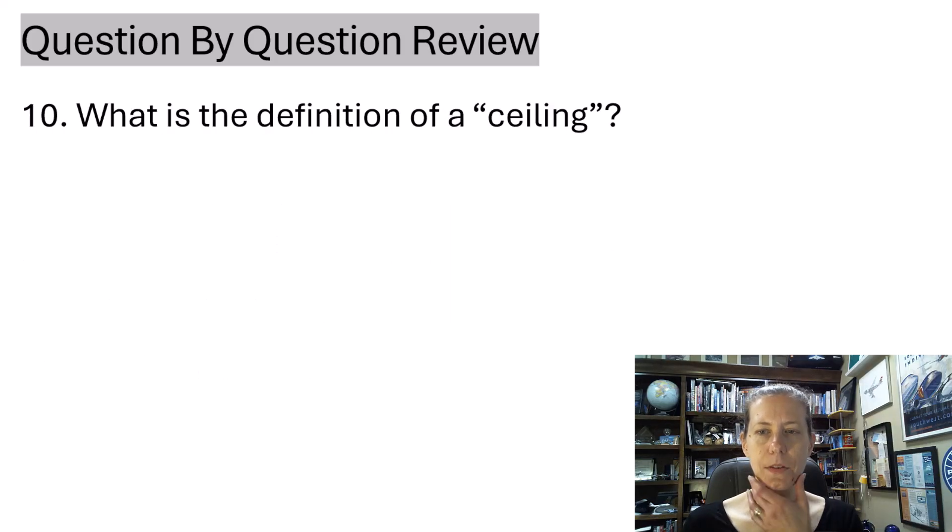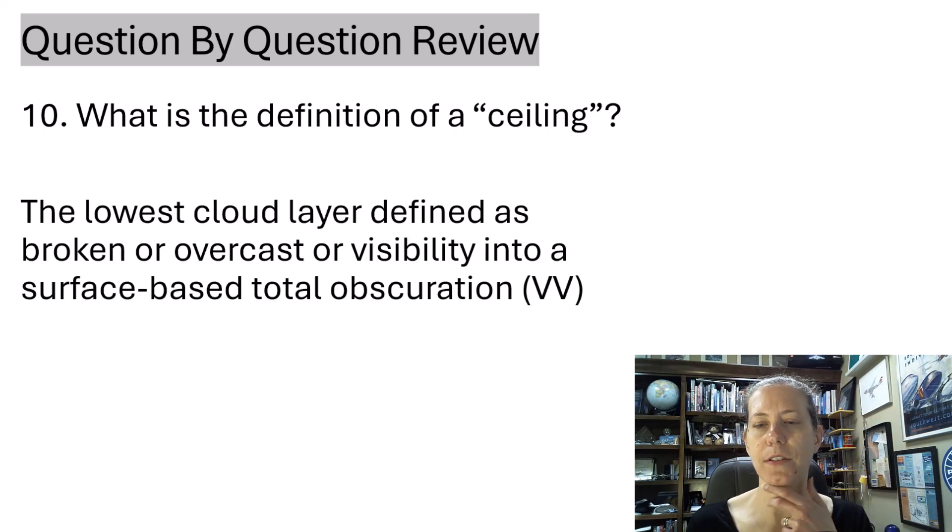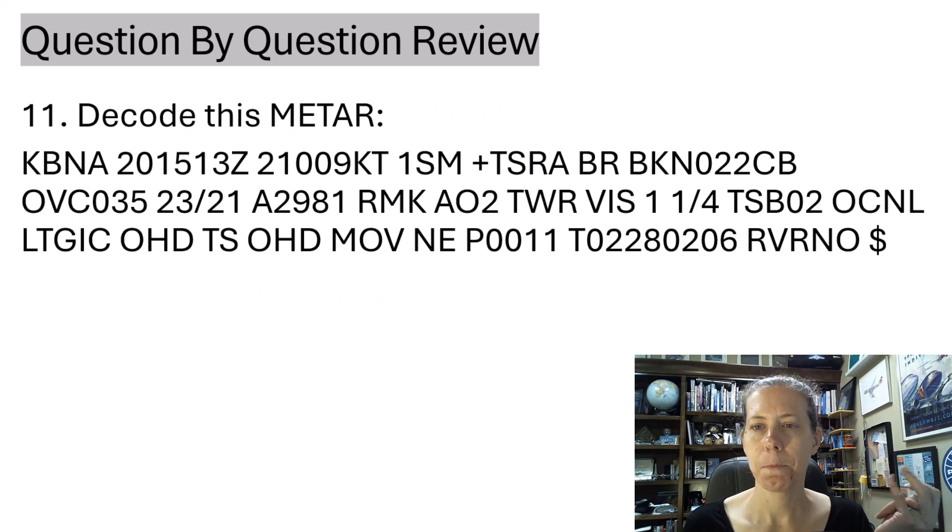Ceiling: the definition of a ceiling. Another fun meteorological question that also goes into 14 CFR, but it is the lowest cloud layer defined as broken or overcast, or the visibility into a surface-based total obscuration. You can find it on a METAR as VV, which stands for vertical visibility.